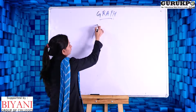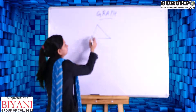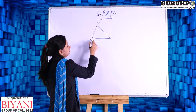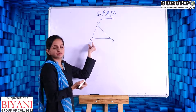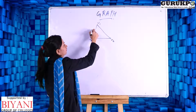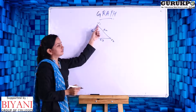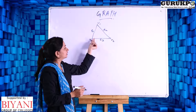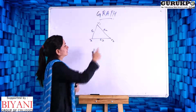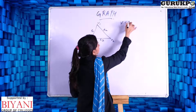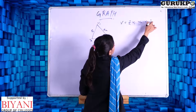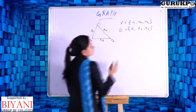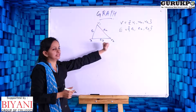Let us take an example. If I draw like this, this is a graph with 1, 2, and 3 vertices and 1, 2, and 3 edges. I am naming vertices V1, V2, and V3, and edges E1, E2, and E3. So there are 3 vertices V1, V2, V3 and 3 edges E1, E2, E3. This is a simple example of a graph — a set of vertices and a set of edges combined is called a graph.